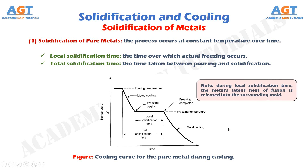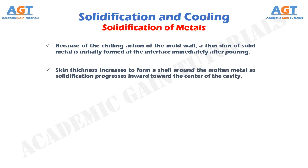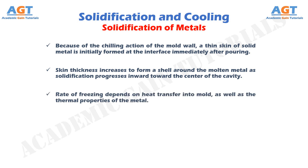During local solidification time, the metal's latent heat of fusion is released into the surrounding mold. Because of the chilling action of the mold wall, a thin skin of solid metal is initially formed at the interface immediately after pouring. Skin thickness increases to form a shell around the molten metal as solidification progresses inward toward the center of the cavity. The rate of freezing depends on heat transfer into the mold, as well as the thermal properties of the metal.